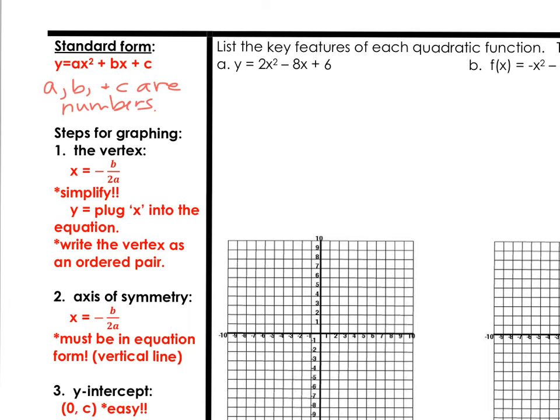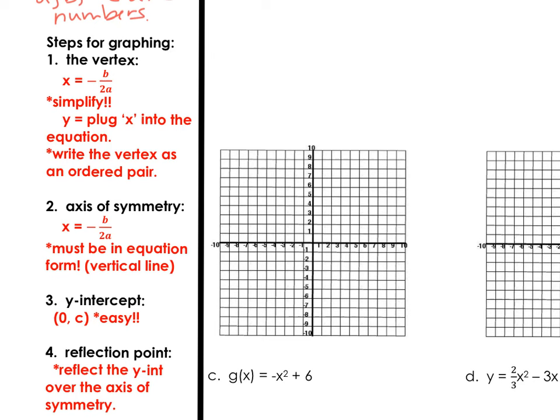The first thing you want to do is calculate where the new vertex is — this is going to be the most amount of work in step 1. The formula to find the x coordinate of the vertex is x equals negative b over 2a. Get to know that formula; you're going to use it a lot. If that fraction can be simplified, always do that before the second part. To get the y value of the vertex, just plug that x value back into your equation. When you're done, write it as an ordered pair. That's step 1, and that's the most amount of work.